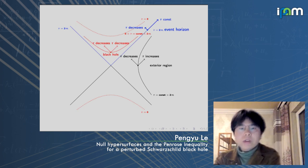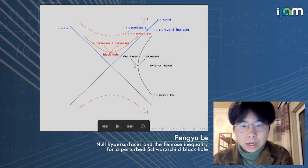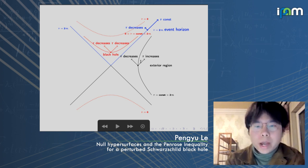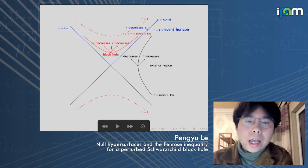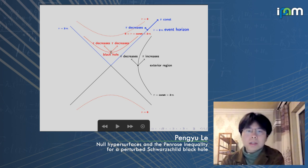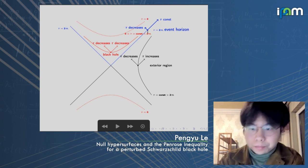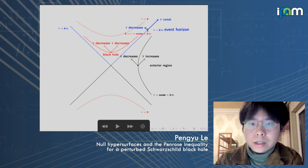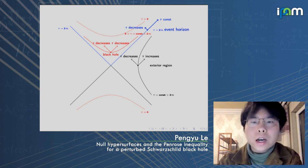The spacetime is divided into three regions. One is the exterior region where the area radius increases in one direction and decreases in the other. Then there is the black hole region where the area radius decreases in both future null directions — these represent a trapped surface. The boundary is the event horizon at r equals 2m. Around this event horizon, the area radius stays constant in one future null direction, which is called the marginally trapped surface.